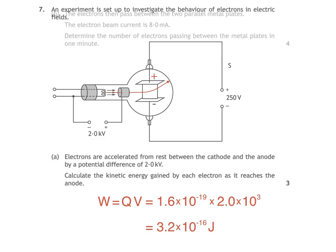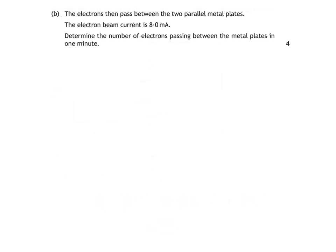Here's part B of the question. The electrons then pass between the two metal plates. The electron beam current is 8 milliamps. Determine the number of electrons passing between the metal plates in one minute. First we use the equation Q equals IT in order to find the total charge transferred in one minute, remembering to convert this time to 60 seconds. So we get a current of 8 times 10 to the negative 3 amps multiplied by 60 seconds, which gives us a charge of 0.48 coulombs.